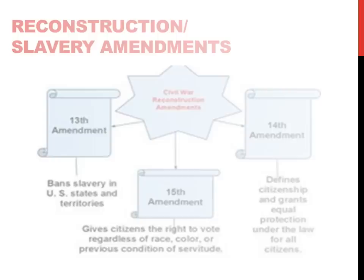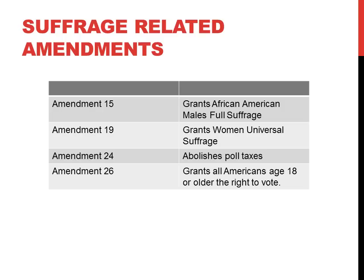Along with the 15th Amendment giving African American men full suffrage rights, AP Government students also need to understand three other important suffrage-based amendments. The 19th Amendment gave women universal suffrage, the 24th Amendment abolished poll taxes as a requirement to vote, and the 26th Amendment gave all Americans age 18 or older the right to vote.